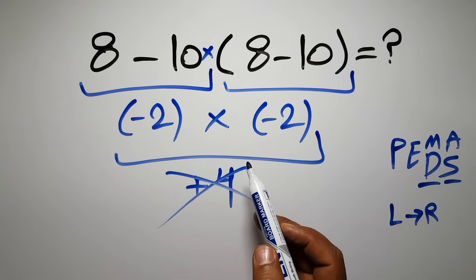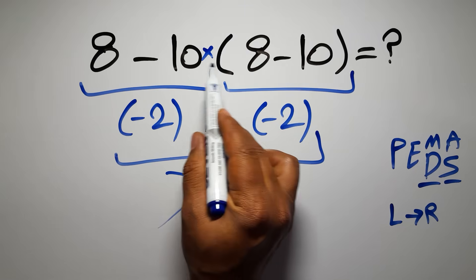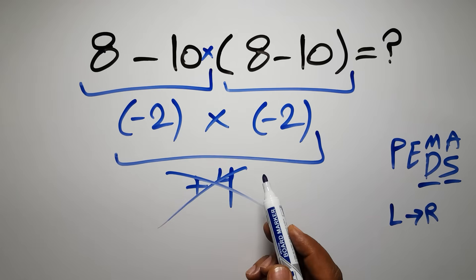Here we have a multiplication because in mathematics when a number is placed next to parentheses it means multiplication, and we usually don't write the multiplication sign for brevity.